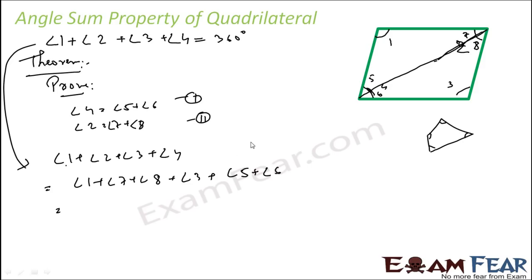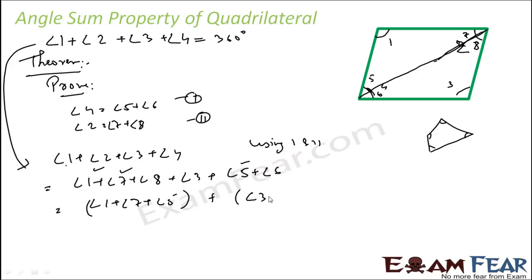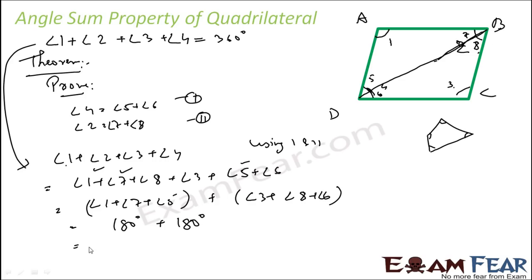Using the substitutions, we get: angle one plus angle seven plus angle eight plus angle three plus angle five plus angle six. Grouping them: angle one plus angle seven plus angle five form one group, and angle three plus angle eight plus angle six form another group. If we name the vertices A, B, C, D, then angle one plus angle seven plus angle five are the angles of triangle ABD, which equals 180 degrees. Similarly, angle three plus angle eight plus angle six are the angles of triangle BCD, which also equals 180 degrees. So 180 plus 180 equals 360 degrees. Thus we have proved that the sum of angles of a quadrilateral is always 360 degrees.